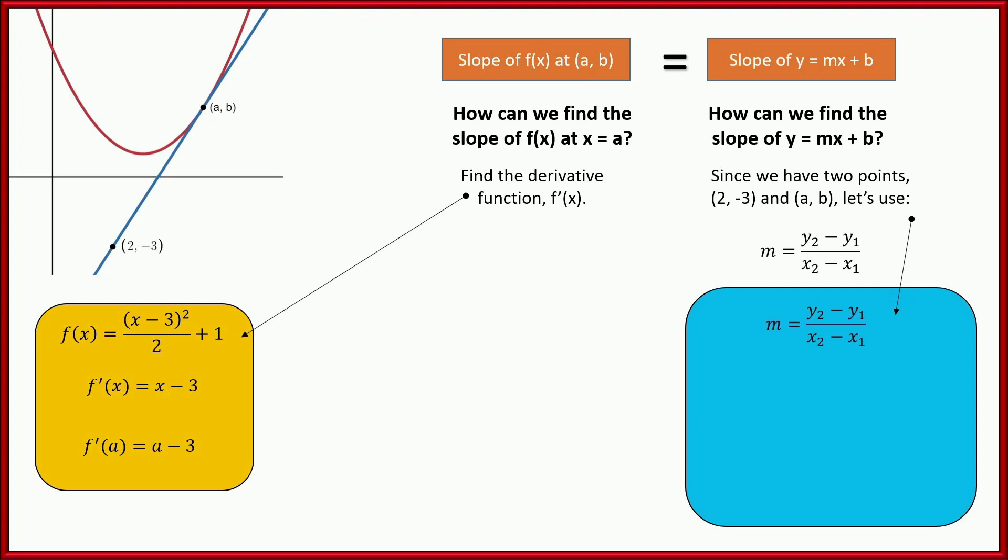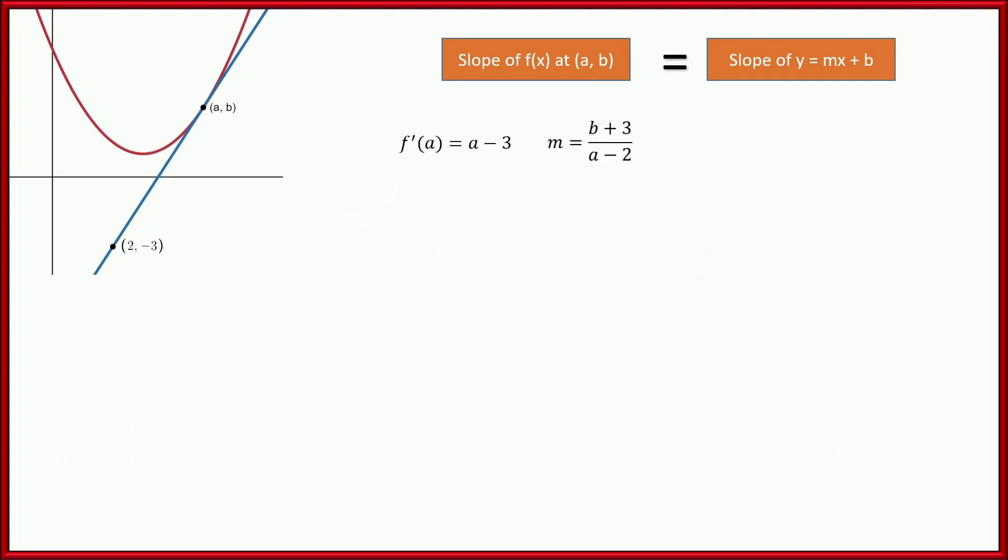So, change of y over change of x. We have the point (a,b) and (2,-3). Let's plug in the values. b minus negative 3 is, of course, b+3. And then a-2. Well, that's the difference of the x's. So here's our two equations. This is the equation for the slope of the parabola. This is the formula or the equation for the slope of the line. Let's go ahead and set them equal to each other, like this right here.